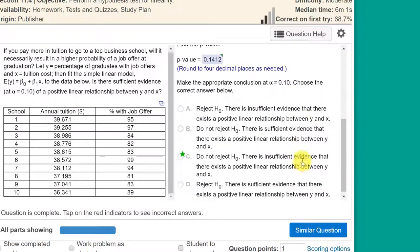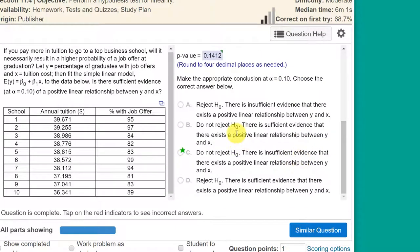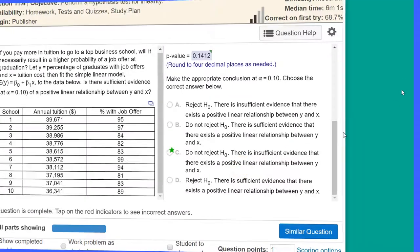Let's look at the last part there. It says, what is the conclusion? Well, because our p-value is above our alpha of 0.1, we've got a p-value of 0.14. That's greater than 0.1. Therefore, we fail to reject or do not reject the null. And that means there's insufficient evidence that there exists a positive linear relationship that beta 1 is greater than zero. Hope this helps.